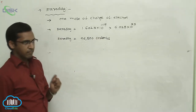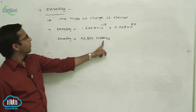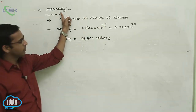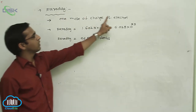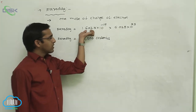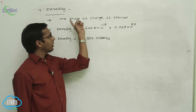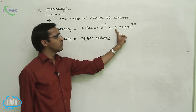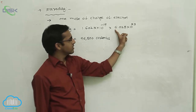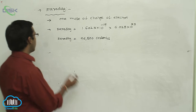The one Faraday value is equal to 96500 coulombs, meaning one mole of charge of electron is called as Faraday. That Faraday equals: charge of electron is 1.6023 into 10 to the power of minus 19, and one mole equals one Avogadro number of molecules, that is 6.023 into 10 to the power of 23 molecules.